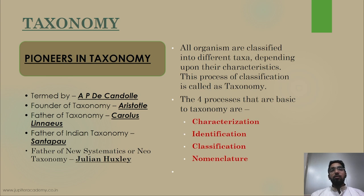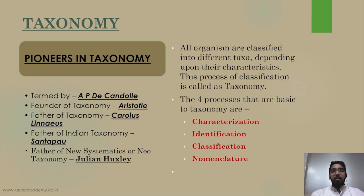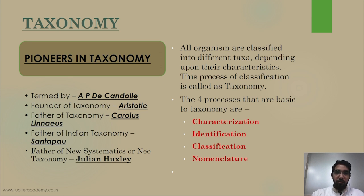Several scientists have worked in taxonomy. The person who termed 'taxonomy' is APD Cantor. The founder of taxonomy is Aristotle — the first person to study the characters of organisms and classify them. For example, Aristotle classified plants into three groups based on height: herbs, shrubs, and trees. In animals he classified them into organisms without RBC, termed 'Anaima,' and organisms with RBC.